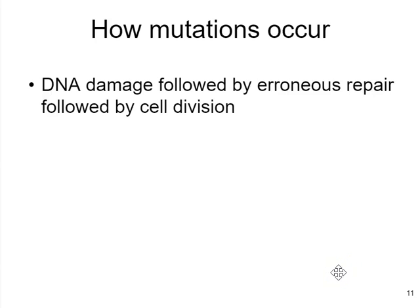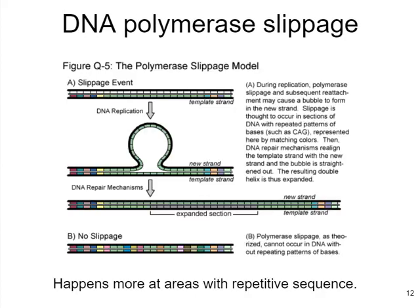Let's talk about how mutations occur. Remember that a mutation means you've had DNA damage or change, followed by erroneous or faulty repair, followed by cell division.